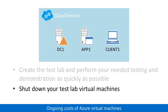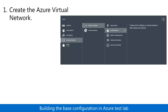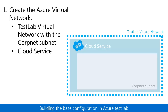Now let's build it out. In step one, you create the virtual lab environment in Azure with the Azure Management Portal. You create a virtual network named Test Lab containing a single subnet named CorpNet. You also create a cloud service that will contain the virtual machines, and a storage account used for the virtual machine VHD files, and an extra disk for the domain controller.